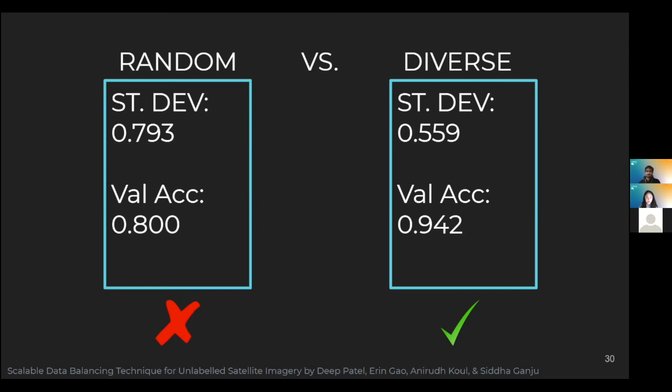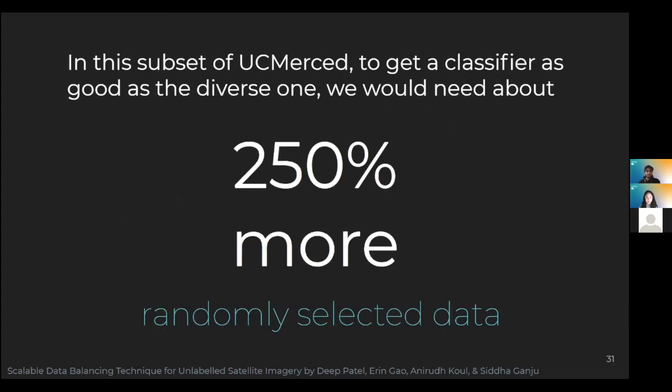Furthermore, if we use this diverse data for training, the accuracy of the classifier increases by about 14% — pretty significant. Finally, if we wanted to match the accuracy of the diverse classifier using randomly selected data, we would need about two and a half times more randomly selected points to do so. So with only a fraction of the labels, we were able to get a more balanced dataset and a far better classifier using embeddings in our diversity algorithm.